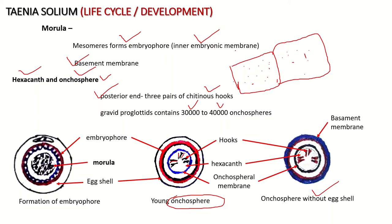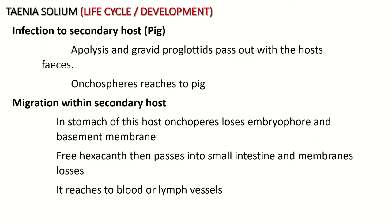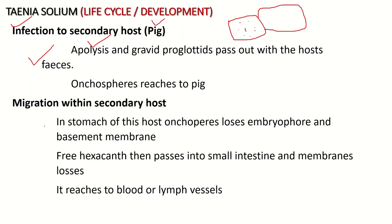Afterward, these proglottids are cut off in a process called apolysis. By apolysis, the posteriormost proglottids are detached; these contain oncospheres by which the secondary host gets the infection. The gravid proglottids pass out with the host's stool or waste material, and thousands of oncospheres are set free to reach the secondary or intermediate host.